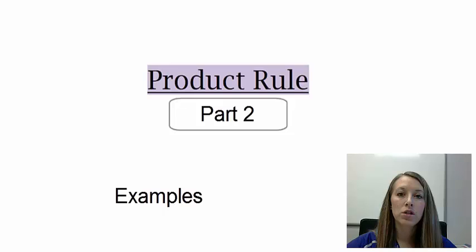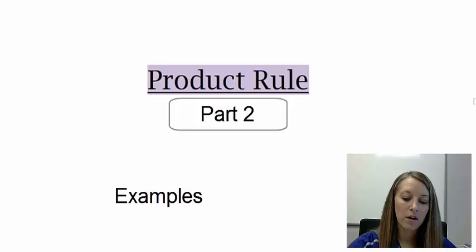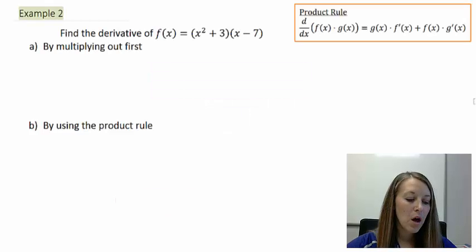So we're going to practice using the product rule in this video. Let's move to our second example. We want to find the derivative of f(x) equals x squared plus 3 times x minus 7.